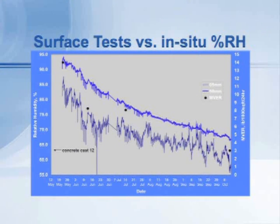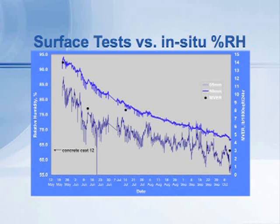I want to talk about the difference in results in a little more detail between surface tests and the in-situ probes, and why it is important to put the probes at the correct depth into the concrete. This graph shows the relative humidity on the left-hand vertical axis versus time across the bottom. These are measurements made in a slab here at our facility several years ago, over the course of about five or six months — the dates at the bottom run from May through October, and the relative humidity runs from about 95 percent down to about 55 percent. The top blue line shows the relative humidity at 40 percent of the depth of the slab, going from about 95 percent when the slab was first cast down to about 65 to 70 percent after five or six months. That's the typical sort of measurement you will find in a concrete floor slab if you follow it over time.